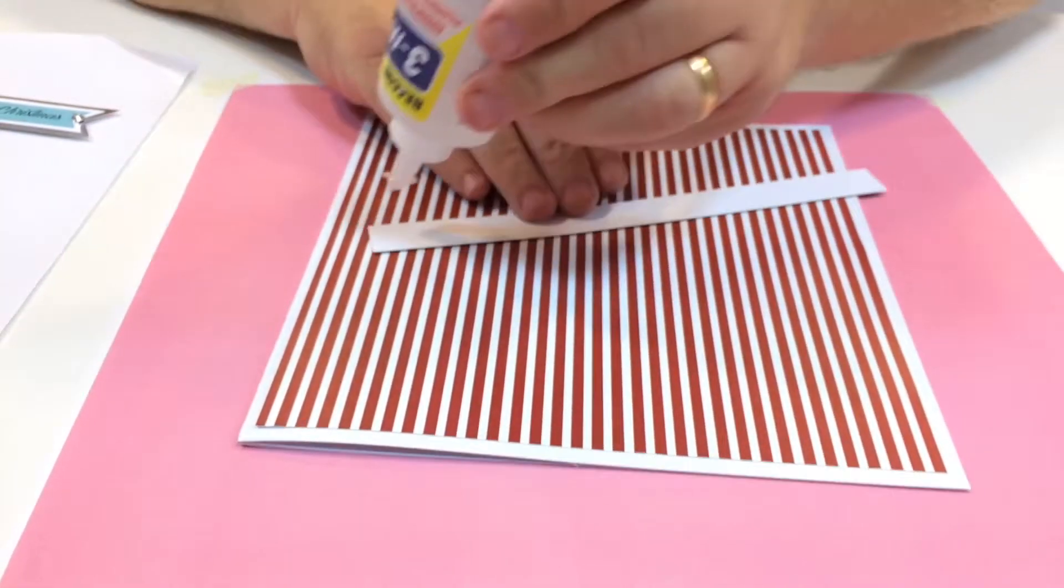Next I've taken some of the background paper and stuck a strip of silver down there. That's going to stick on there down the middle. It'll just give the illusion that the star's hanging. That's what I'm hoping for anyway.